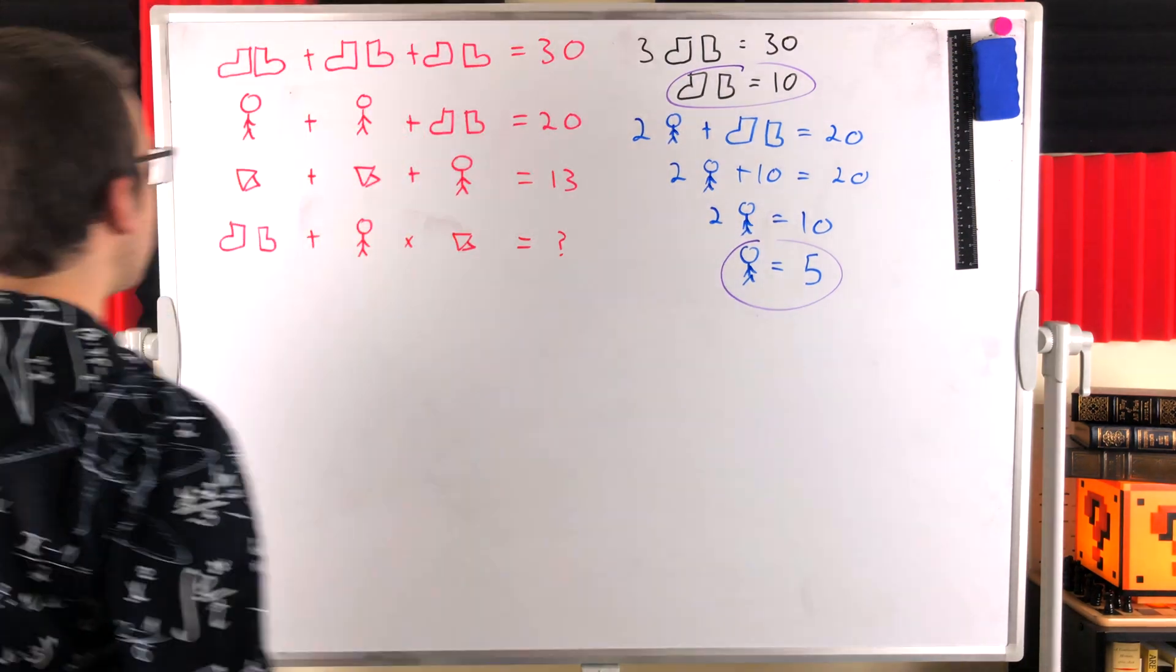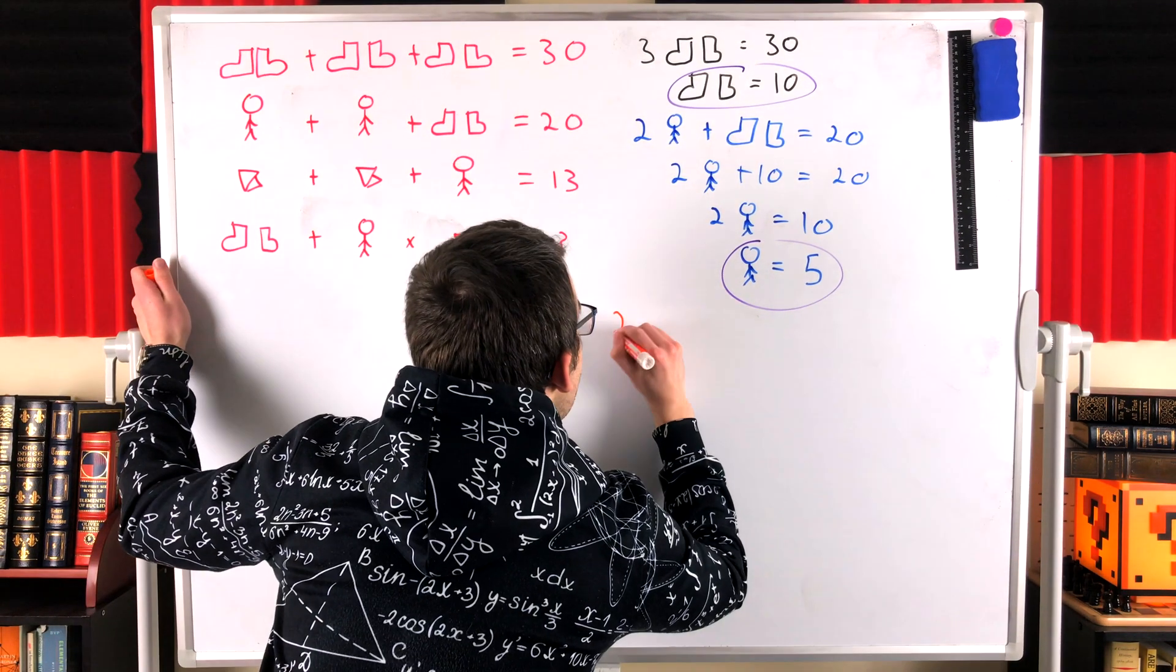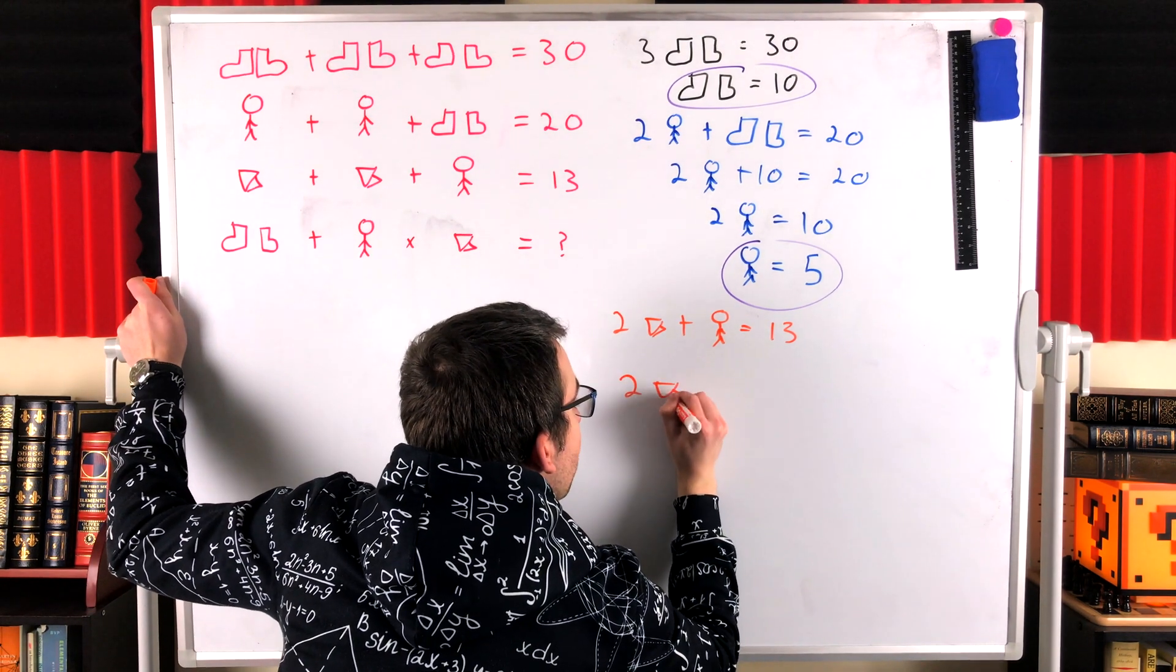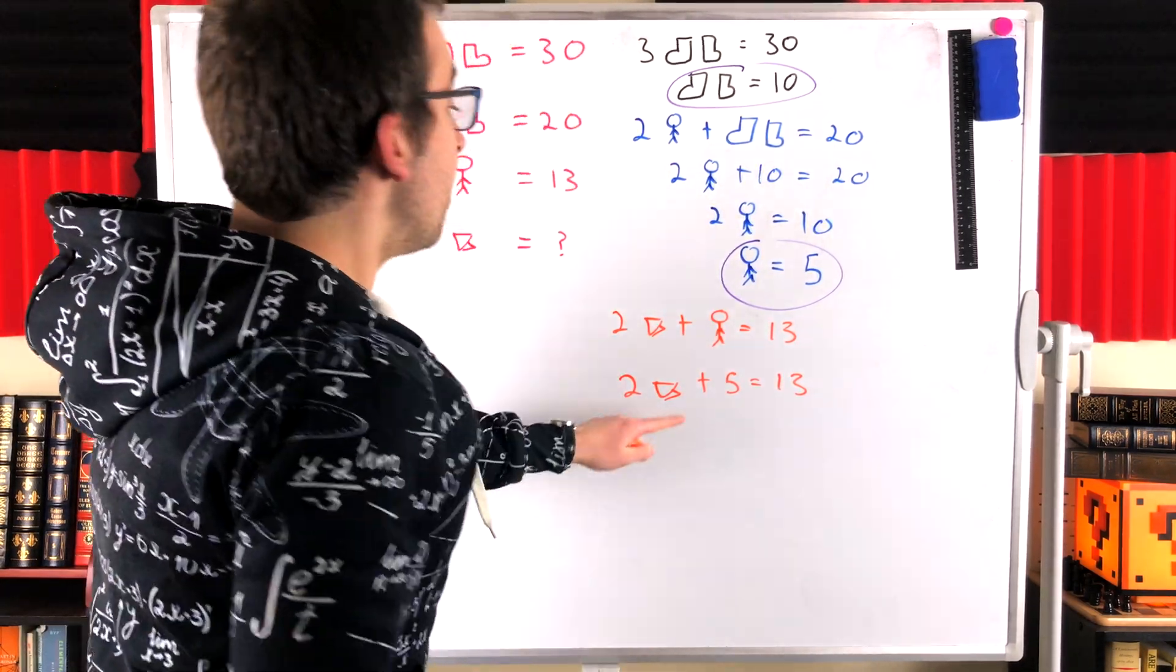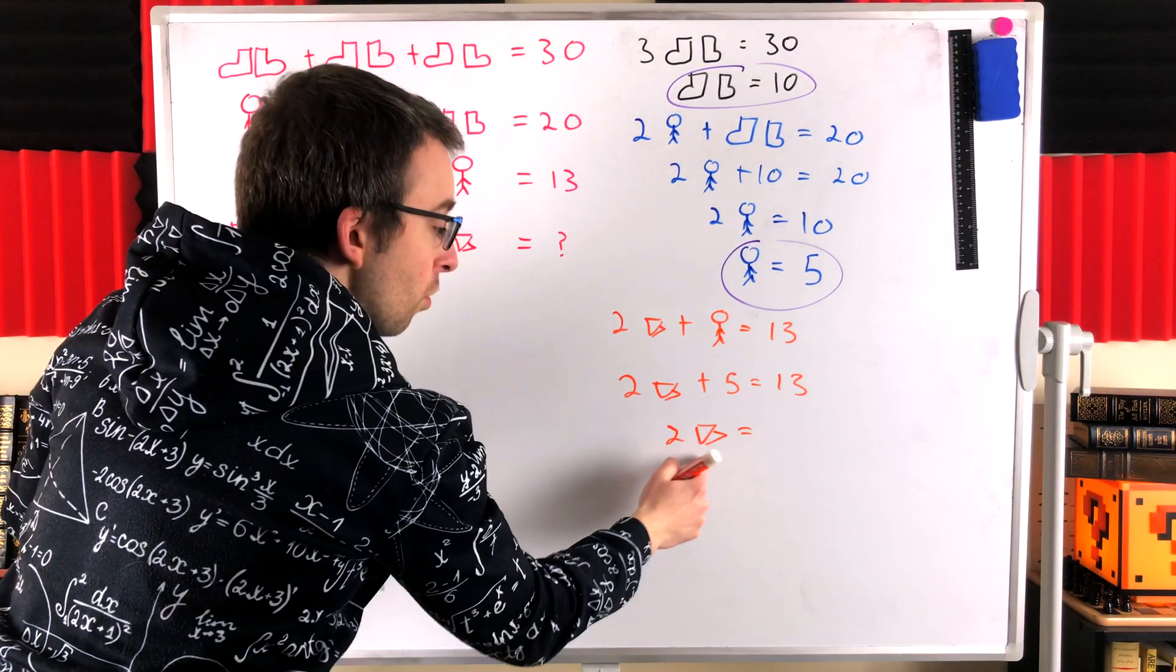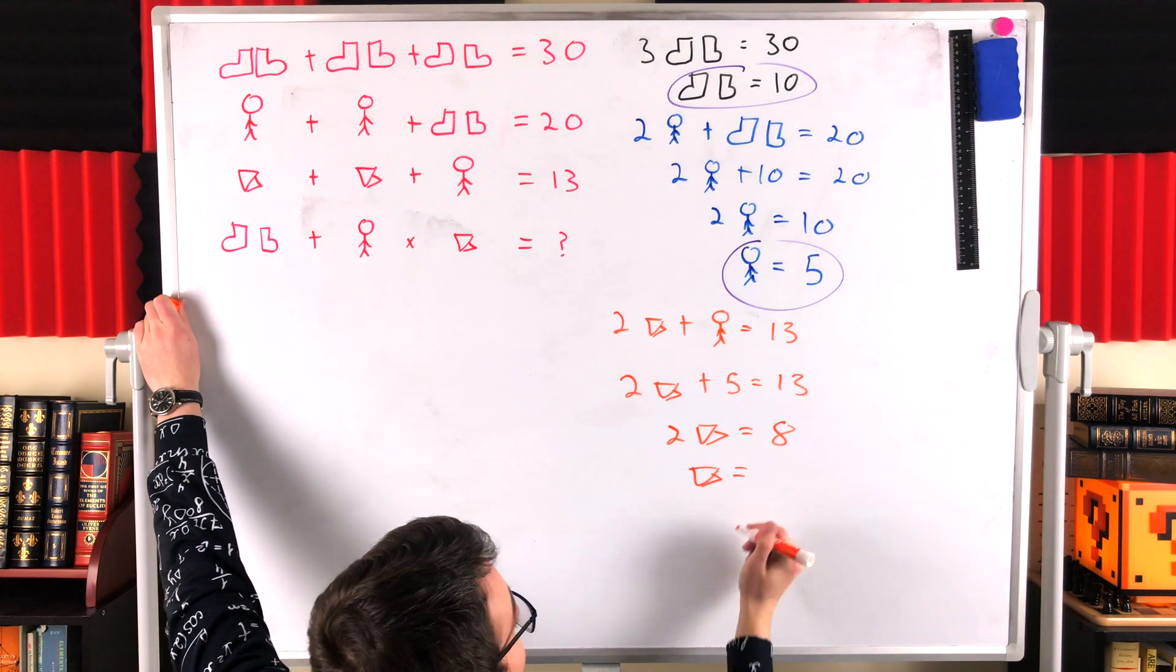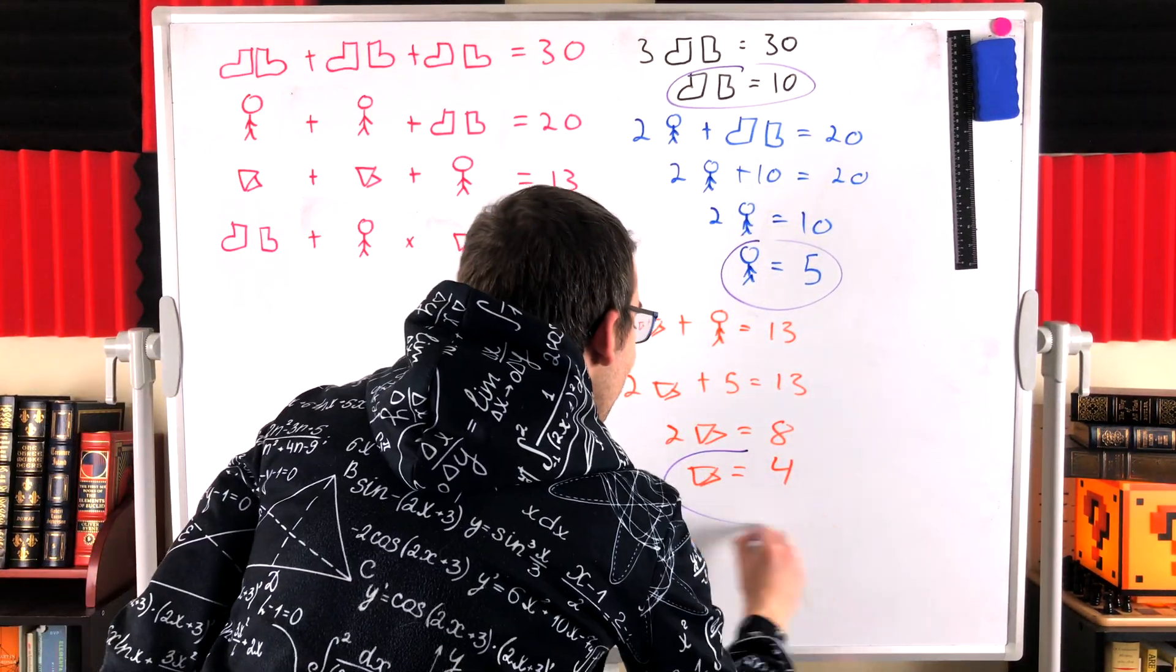Now we can solve for the third and final variable. Pairs of cones plus pairs of cones plus faceless stick figure is equal to 13. So 2 pairs of cones plus faceless stick figure is equal to 13. But we know faceless stick figure is equal to 5. So 2 pairs of cones plus 5 is equal to 13. Subtract 5 from both sides, so two pairs of cones is equal to 8. Divide both sides by 2, pairs of cones is equal to 4. And we've solved for all three variables just like that.